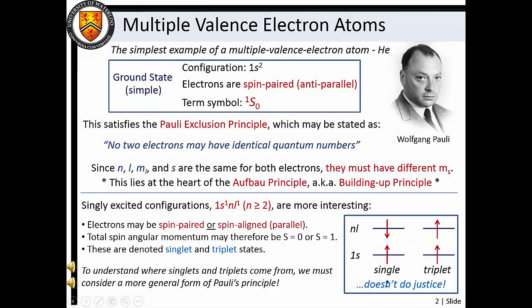One of the simplest examples of a many-electron atom is helium. Helium has two spin-paired electrons occupying the 1s orbital, which we can describe with a singlet S0 atomic term symbol. This electronic configuration satisfies the Pauli exclusion principle, which may be stated as: no two electrons may have identical quantum numbers.